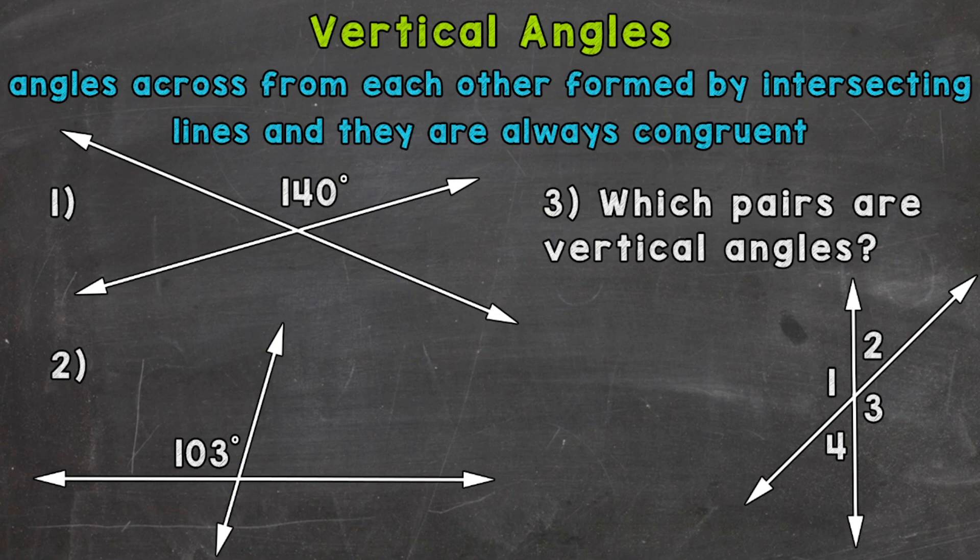So it's going to be this angle right here and it's also going to have a measure of 140 degrees. So again those are angles across from each other formed by intersecting lines and they are always congruent. So they have the same exact angle measure.